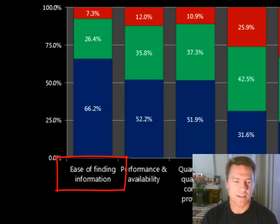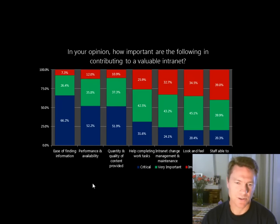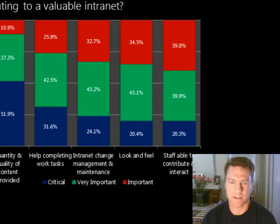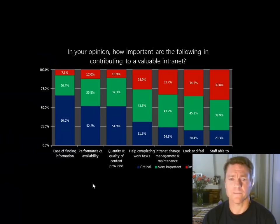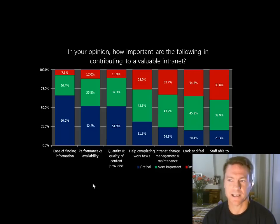The most important quality is ease of finding information — perhaps not surprising. What is surprising is that at the other end of the scale, staff being able to contribute and interact is the lowest — the least important quality of a valuable intranet according to end users. It's even less important than look and feel. This sends a clear message that employees aren't that interested in contributing content. They're happy to find and use it, but trying to encourage people to write up their processes is often a thankless task.